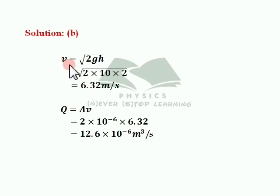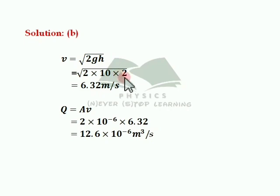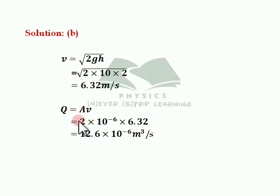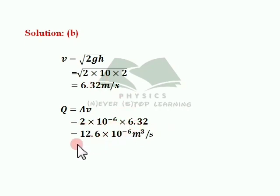First, calculate velocity of efflux: V equal to root of 2gh. g is 10 meters per second square and h is equal to the height of the tank itself since it is fully filled — that is 2 meters. Simplifying, you get V equal to 6.32 meters per second. Then Q equal to AV: 2 into 10 to the power minus 6 meters square into 6.32, which gives 12.6 into 10 to the power minus 6 meters cube per second.